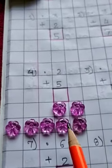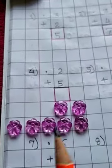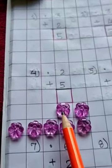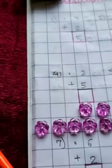Again add these beads. 1, 2, 1, 2, 3, 4, 5. So total is 1, 2, 3, 4, 5, 6, 7. So write 7 here.